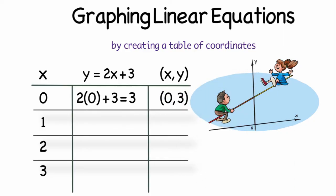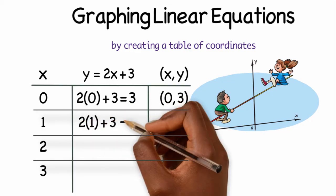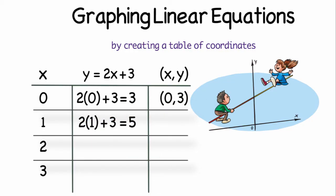My second x value that I chose was 1. 2 times 1 is 2 plus 3 is 5. So the y value that will be paired with the 1 will be 5. So (1, 5) will be my next coordinate.